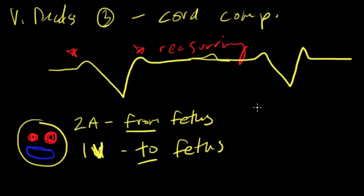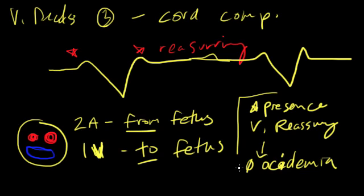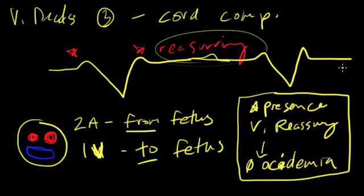Before we move on, I'll say that the presence of variables is reassuring. And we know that when the presence is there, we can be reasonably sure that there is no acidemia. So the presence of variable accelerations is reassuring, especially when they have these shoulders.